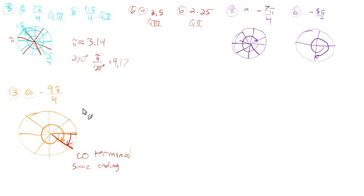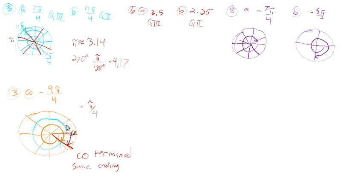So we could call that angle negative π over 4, going the short clockwise route. We could also go in the positive direction from the initial side around to the same terminal side. Counting in π over 4 increments: 1, 2, 3, 4, 5, 6, 7 — that's 7π over 4. And this is what the problem asks for: a positive and a negative angle coterminal with negative 9π over 4.